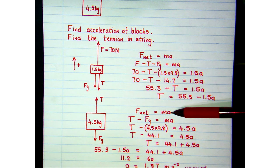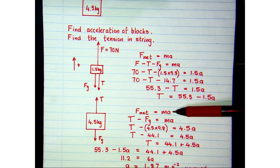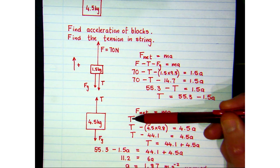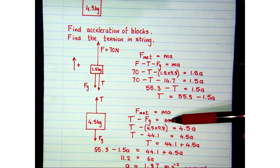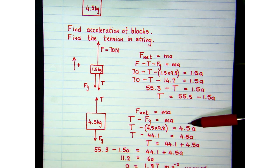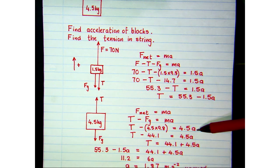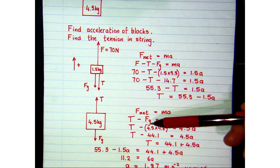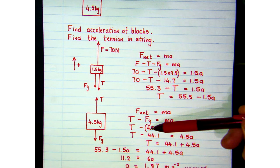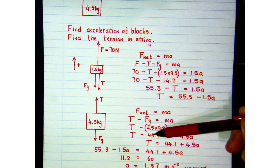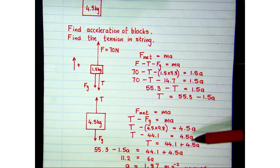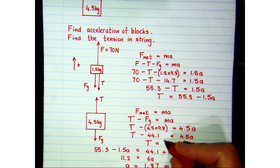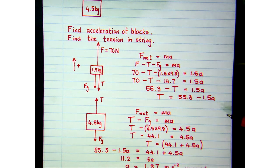So if we apply Newton's second law to that, up is positive, so T minus Fg will give us our net force and the mass is the 4.5 kg block multiplied by the acceleration that we're looking for. The 4.5 kg block has a weight, mass times g, and that comes out to be 44.1. If we take that across, we get a second expression for the tension in the string.